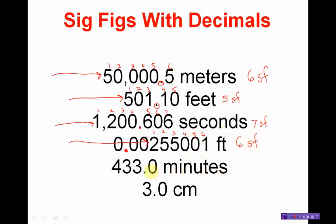This measurement has a decimal point. The decimal point tells me I'm coming in from the left-hand side. I hit the 4, I stop, and I count 1, 2, 3, 4 significant figures. And the last problem has a decimal point, and I'm coming in this way. I have 1, 2 significant figures.